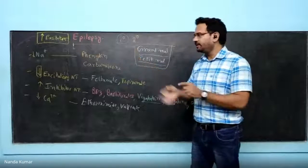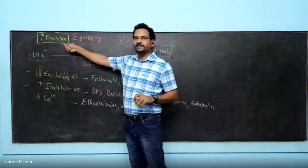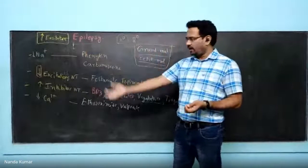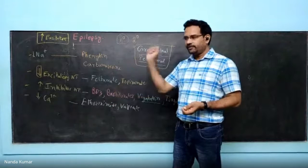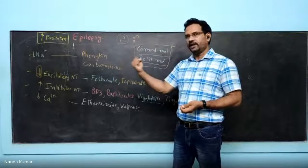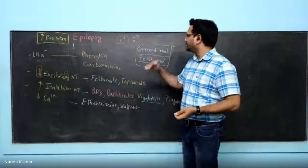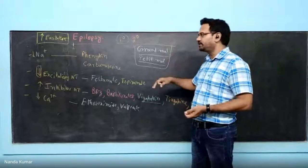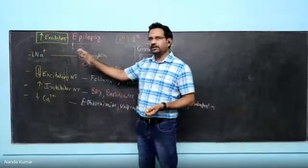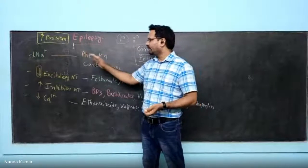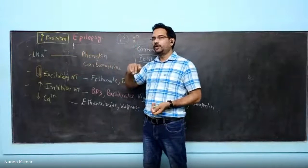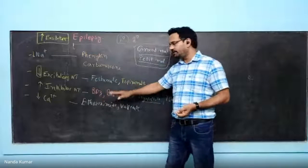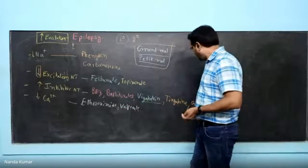To recap: epilepsy results from increased excitation or continuous neuronal firing. The major types are grand mal (tonic-clonic) and petit mal (absence seizures). The drug classes are: sodium channel blockers — phenytoin and carbamazepine; reducing excitatory neurotransmission via glutamate — felbamate and topiramate; enhancing inhibitory neurotransmission — benzodiazepines, barbiturates, vigabatrin, tiagabine, and gabapentin; and reducing or blocking calcium channels — ethosuximide and valproate.